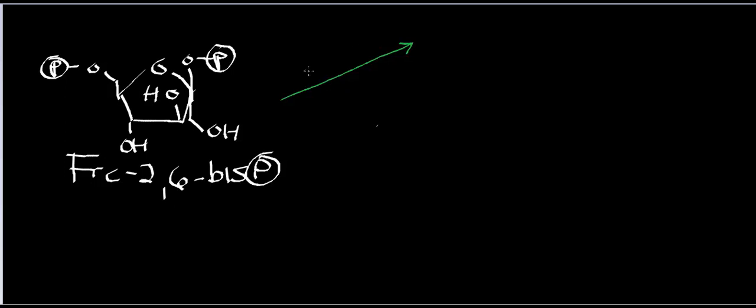This molecule normally activates phosphofructokinase 1 (PFK1). The way it does this is by binding to a fructose 2,6-bisphosphate allosteric site on PFK1. It also decreases the allosteric affinity for PFK1's allosteric inhibitors.